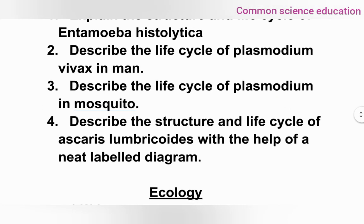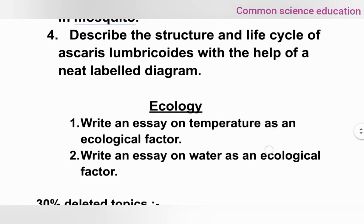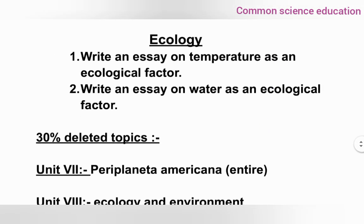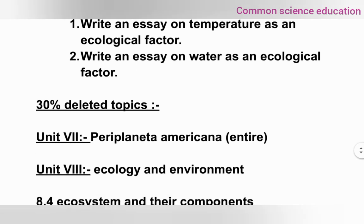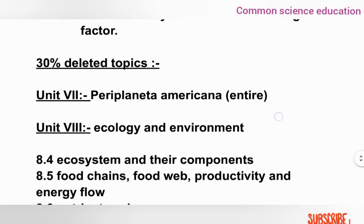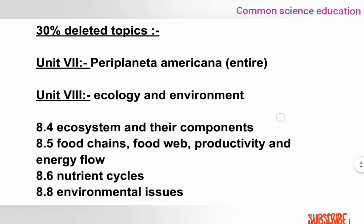For first year students, the important topics are: ecosystems and their components (section 8.4 and 8.5), food chains, food web, productivity and energy flow, nutrients cycle (section 8.6), and environmental issues (section 8.8). These topics are important for the exam.